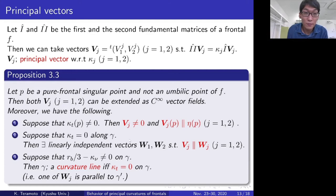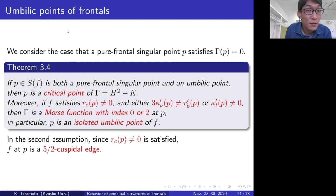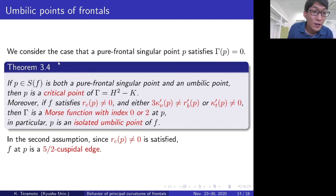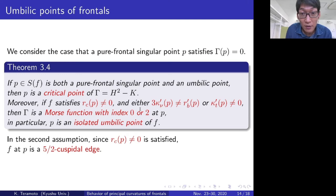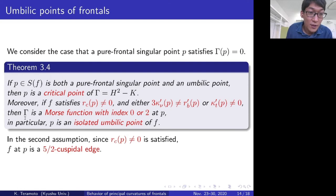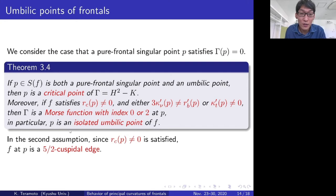Next, we consider umbilic points of frontals, specifically the case that the pure frontal singular point satisfies Γ(p) = 0. In such a case, p is a critical point of Γ. Moreover, if f satisfies that the secondary cuspidal curvature r_c does not vanish at p, and either 3·κ_ν' ≠ r_v' or κ_T' does not vanish at p, then Γ is a Morse function with index 0 or 2 at p. In particular, p is an isolated umbilic point. This is a characterization of an isolated umbilic point of a frontal.